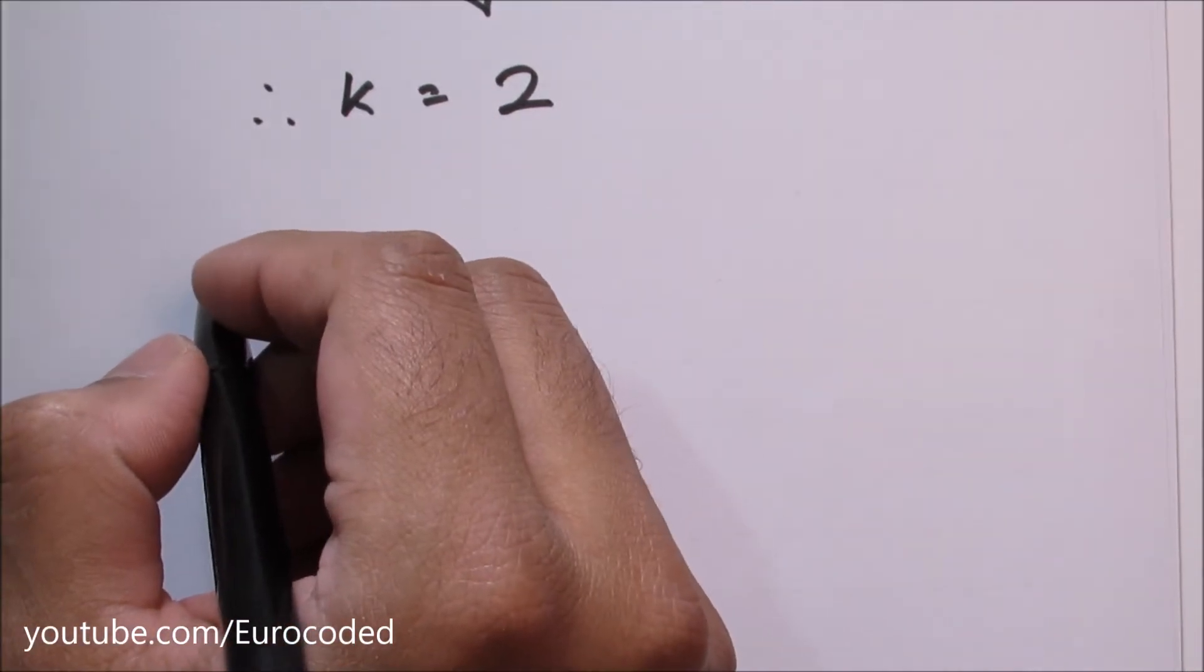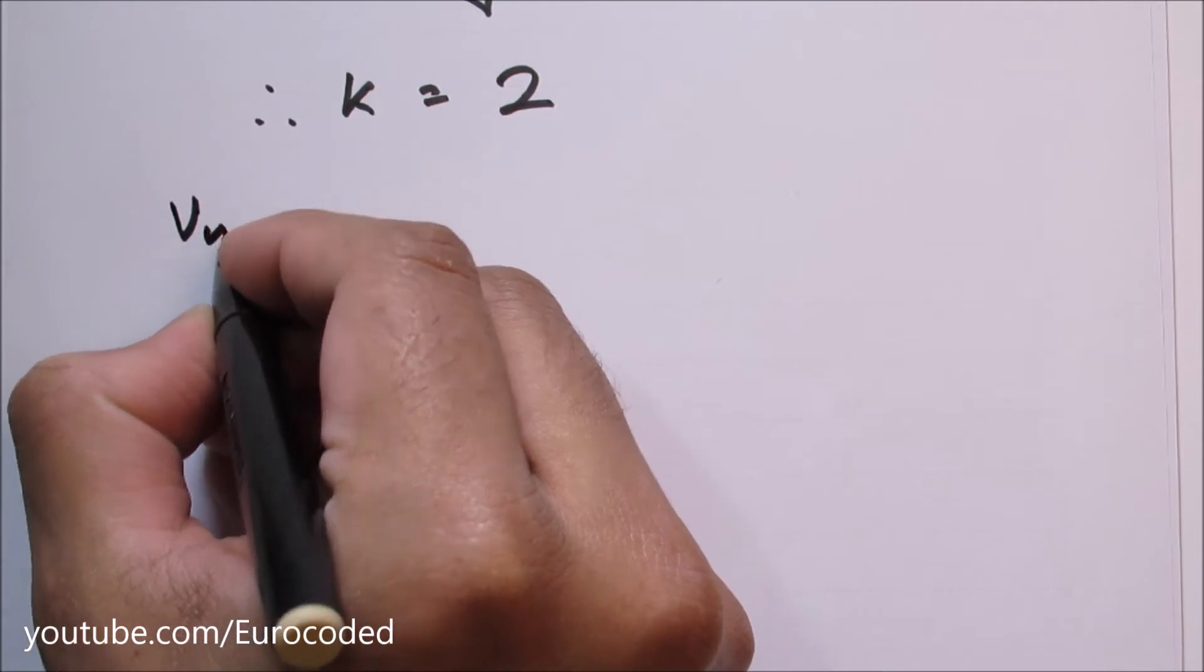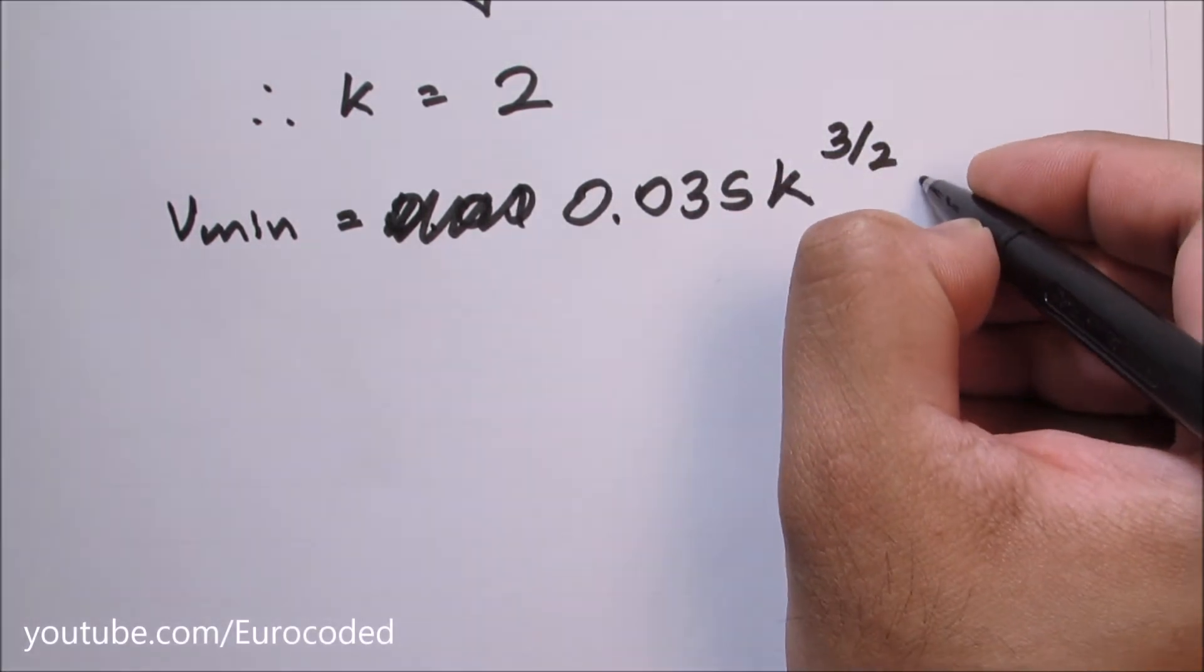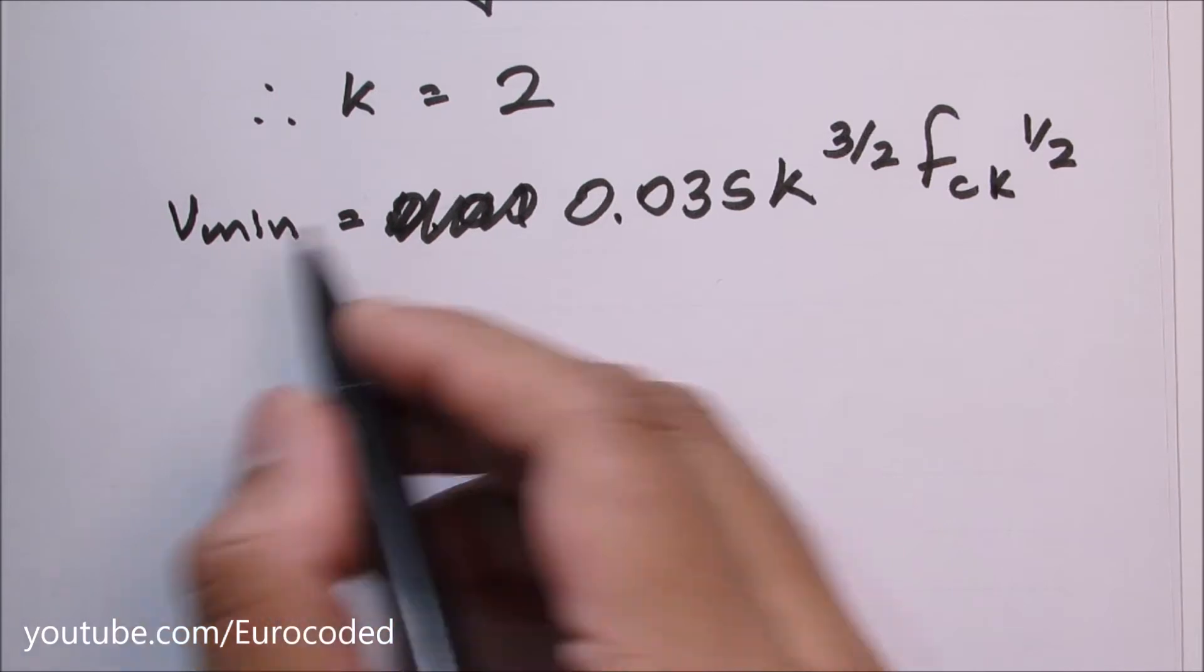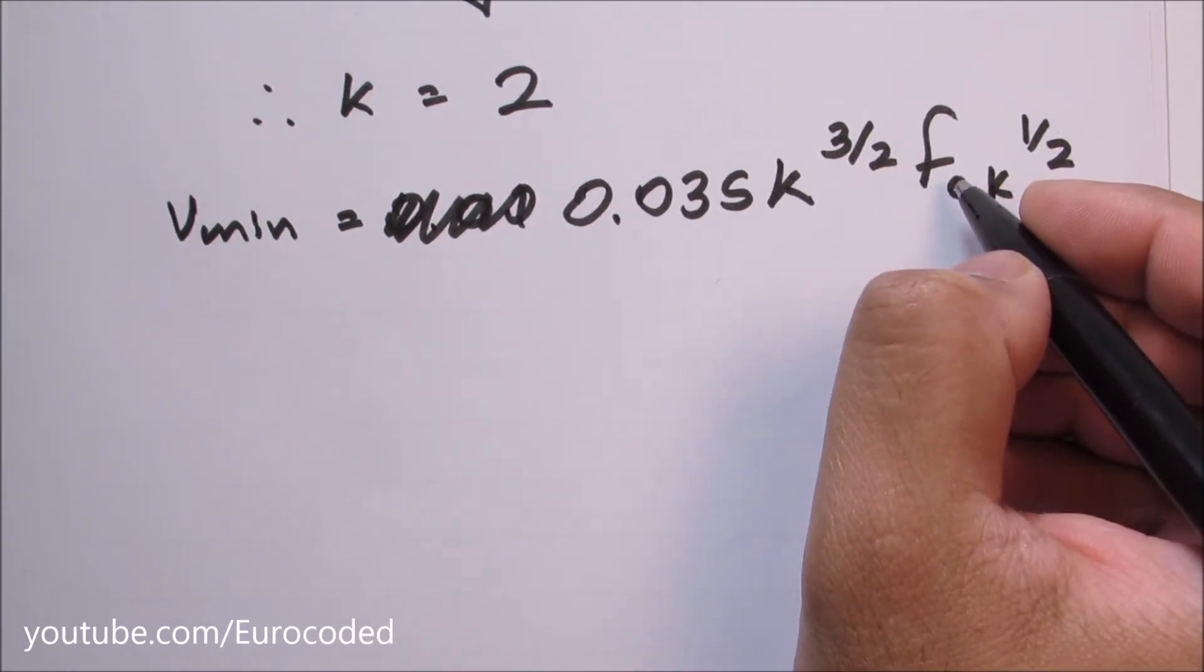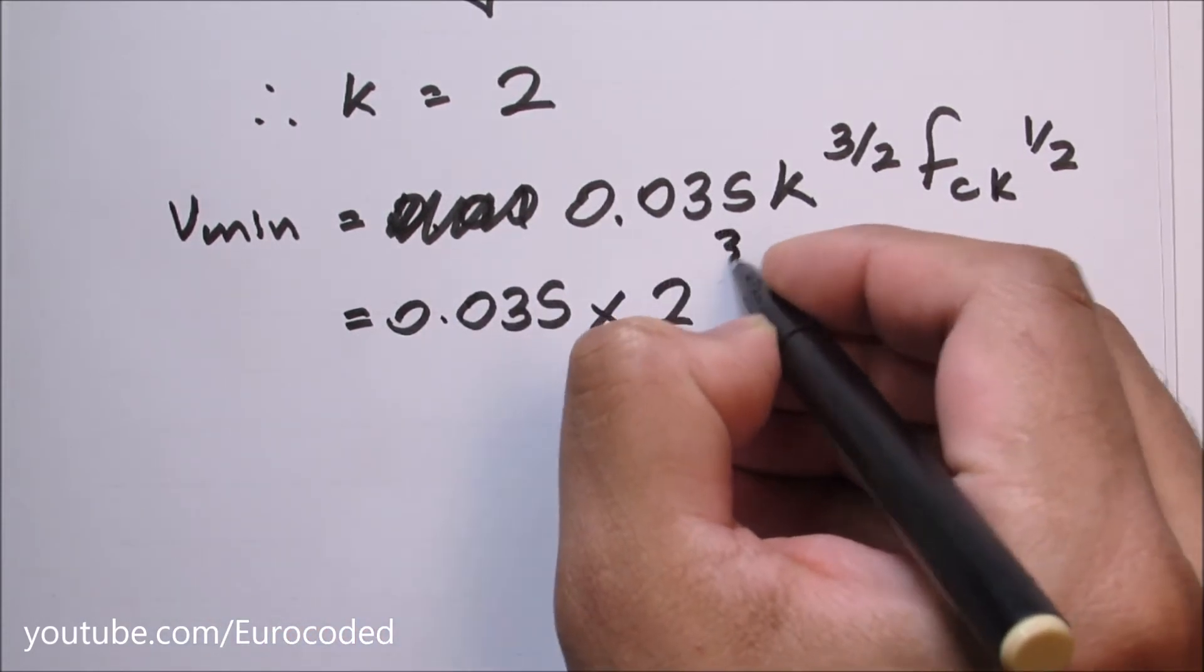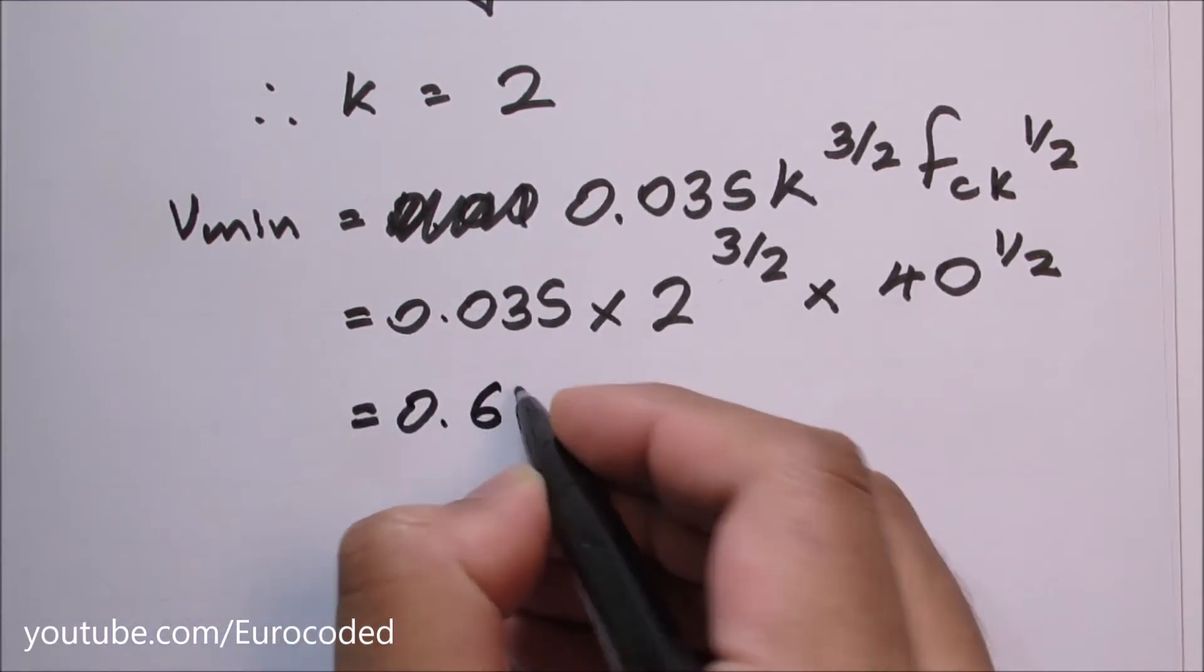Then to take the concrete strength into account we need to calculate v_min where depth factor k is also used. v_min is equal to 0.035 times k to the power of 3/2 times the square root of f_ck. You should bear in mind the UK national annex recommends this formula only for concrete classes below C50/60. This f_ck is the characteristic compressive strength of concrete and this should be in megapascals to get the correct value for v_min. This is equal to, k is 2, f_ck is 40. This comes to 0.626.